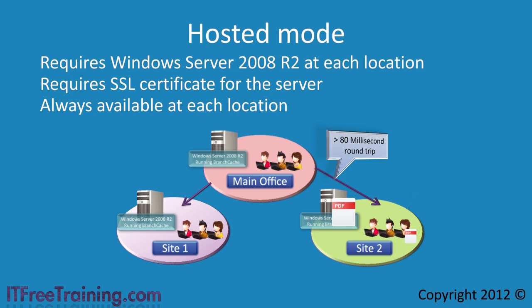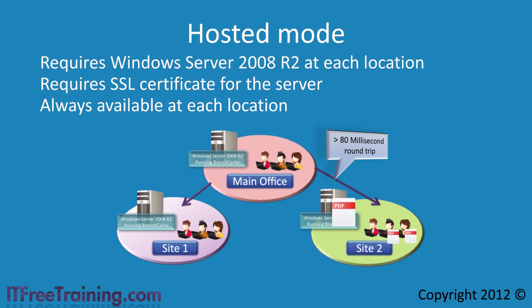If another computer on the local network attempts to access the same file across the wide area network, the client can instead access the file from the cache on the local server. When the file request comes through, the server will first check over the WAN link to see if the file has changed since it cached it, and if not, it will transfer the file to the client from its cache. This saves the file having to be copied over the WAN link a second time.